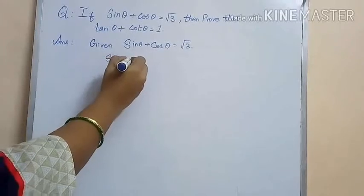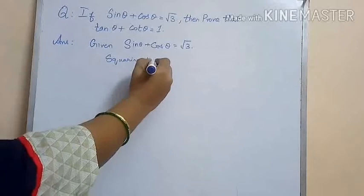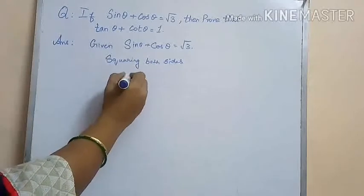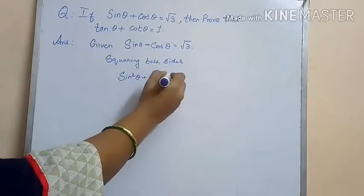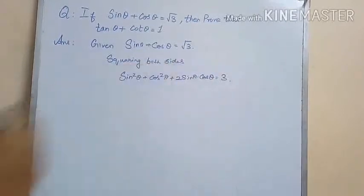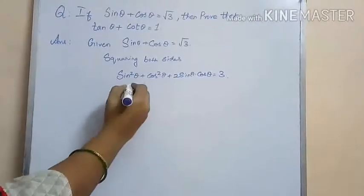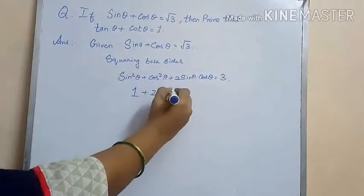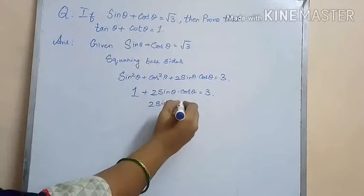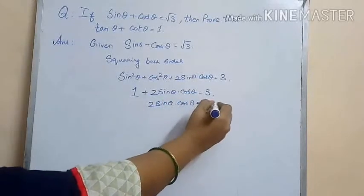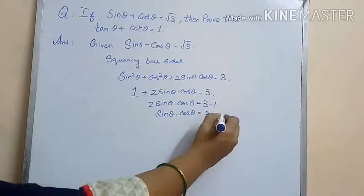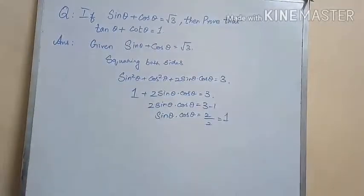Given that sin θ + cos θ = √3, let us square on both sides, which gives us sin²θ + cos²θ + 2 sin θ cos θ = 3. We know that sin²θ + cos²θ = 1, so 1 + 2 sin θ cos θ = 3, giving 2 sin θ cos θ = 2, so sin θ cos θ = 1.